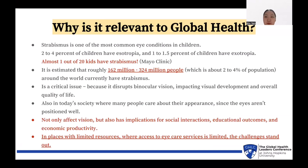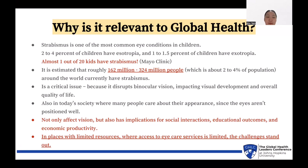Why is Strabismus related to global health? Strabismus is a common condition affecting both children and adults. According to Mayo Clinic, it is one of the most common eye conditions in children — 2-4% have esotropia and 1-1.5% have exotropia, meaning almost 1 out of 20 kids have Strabismus. For adults, about 2-4% around the world, roughly 162 million to 324 million people, currently have Strabismus.